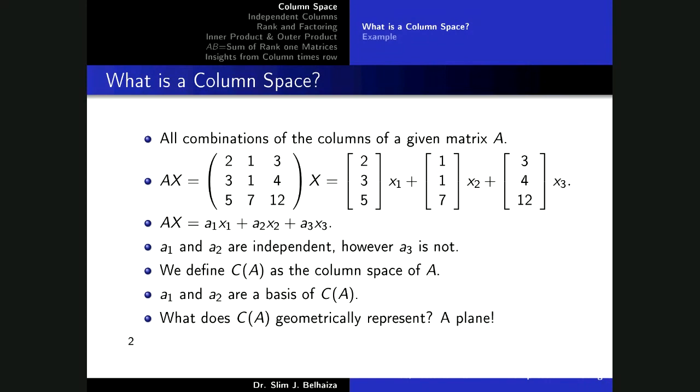What do we mean by a basis? A basis is basically the minimum number of vectors that would be used to generate all the vectors within our space. Here in this column space, A1 and A2 are enough to generate any vector in the column space of A. So what does C(A), the column space of A, represent?